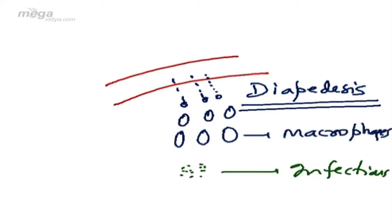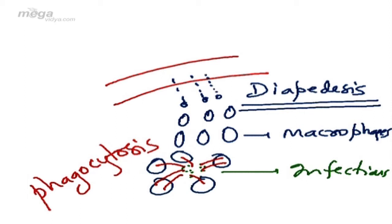After coming out from the blood vessels, these neutrophils move towards the site of infection. On their way they enlarge in size and are called macrophages. They surround the microorganisms and engulf the microorganism. This process is called phagocytosis.